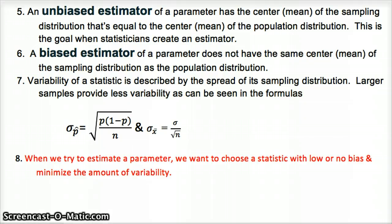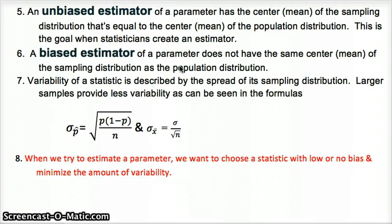The variability of a statistic is how spread out it is. Variance is standard deviation squared, so we can look at the standard deviation — the average distance of each point from the mean. Larger samples will have less variability and will tend to be closer to the true parameter. By probability, we're more likely to have a more accurate center with a larger sample. If we pick a sample size of two, we could easily pick two data points that are far from the true mean, giving us a biased estimator.